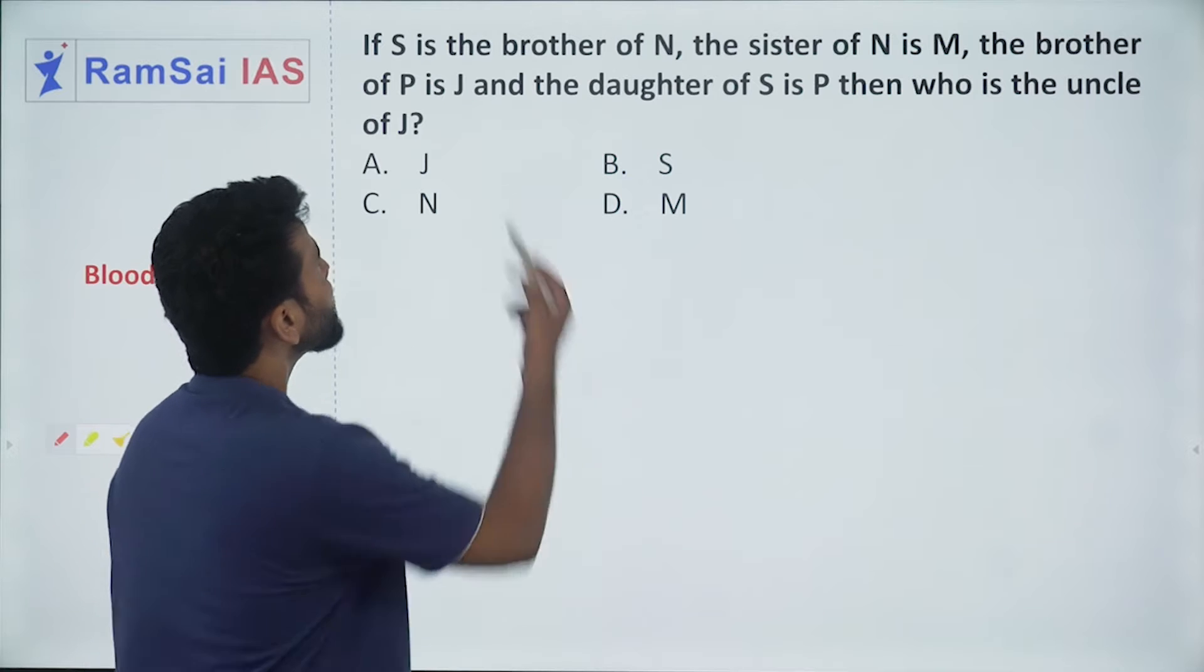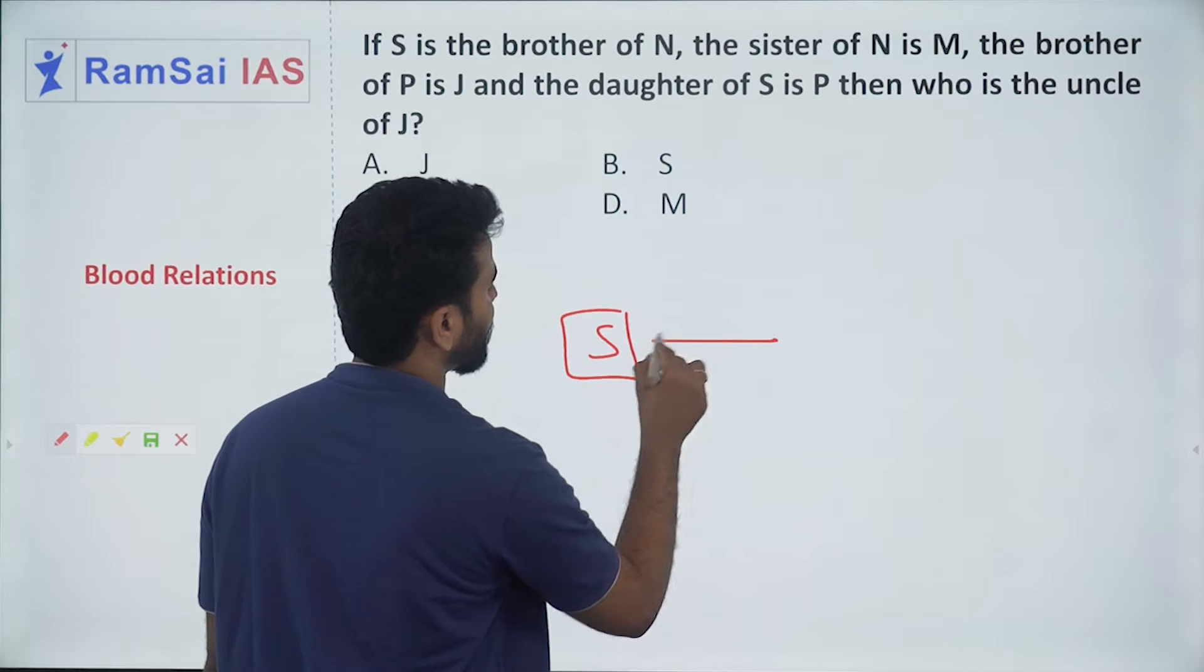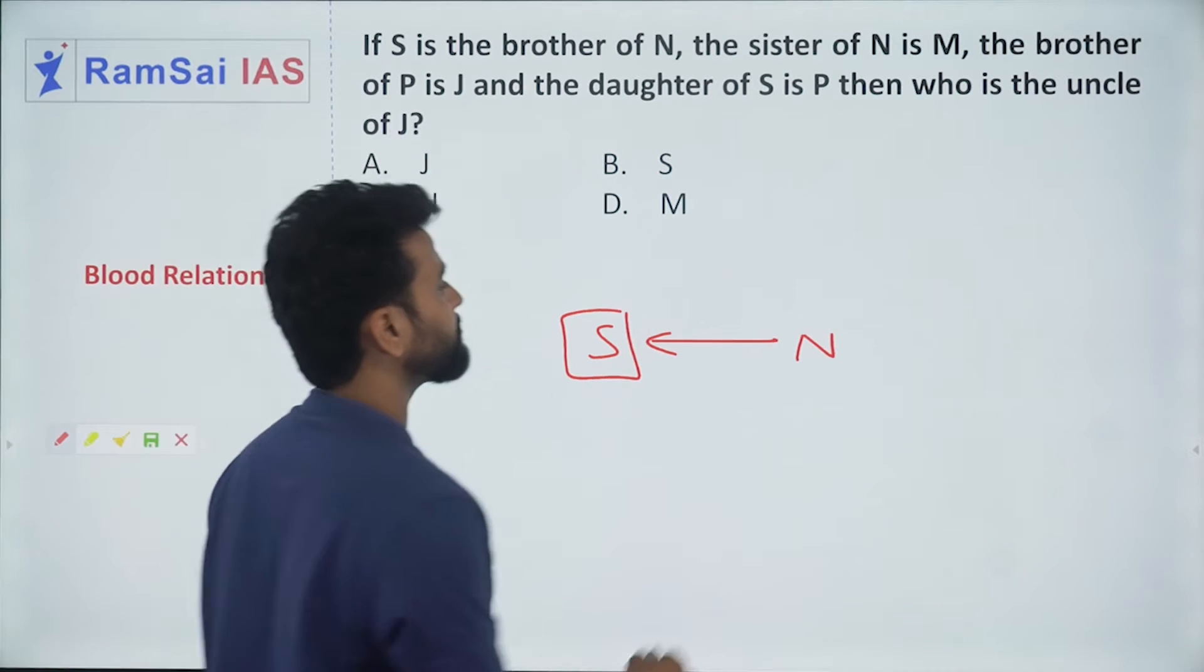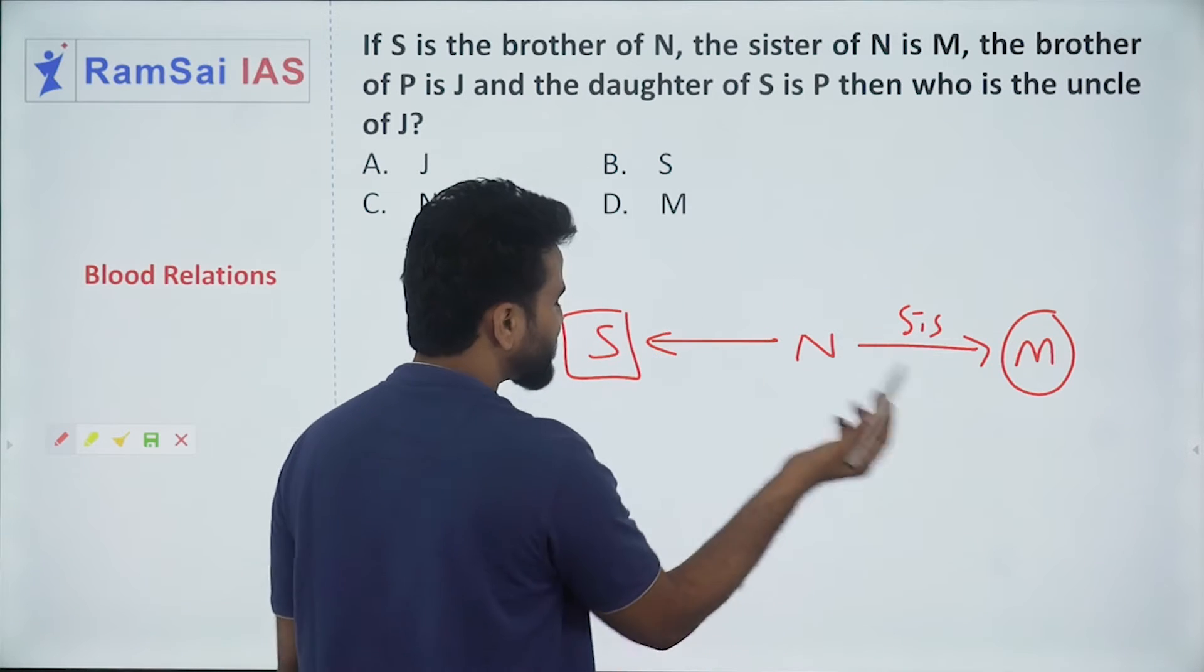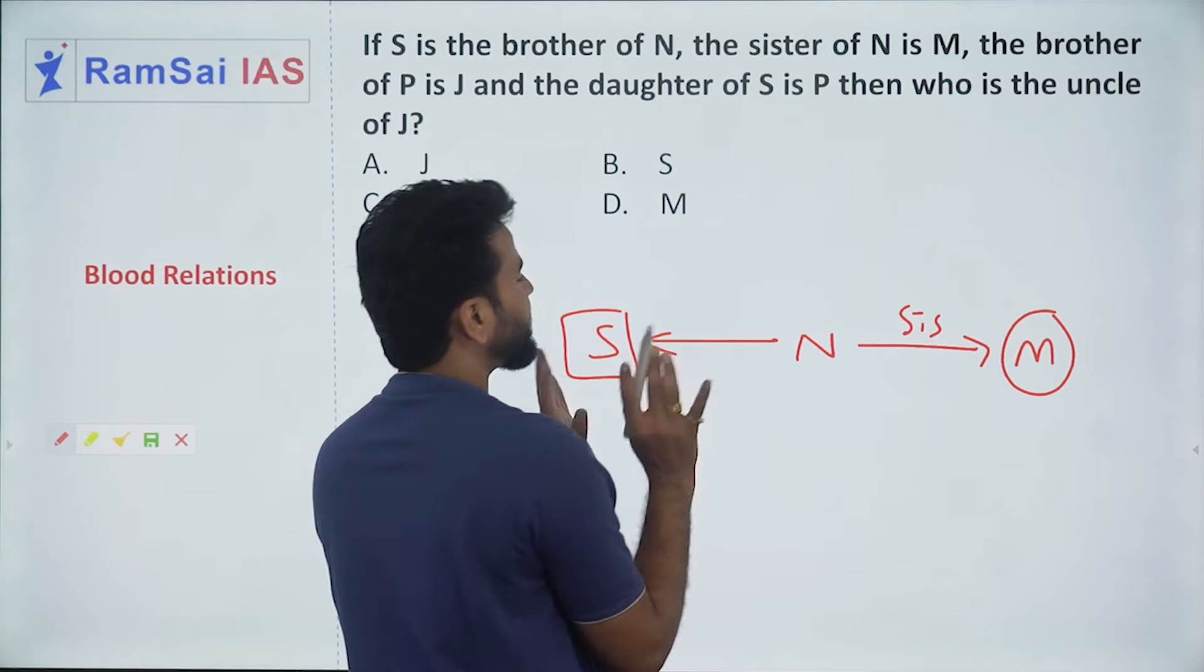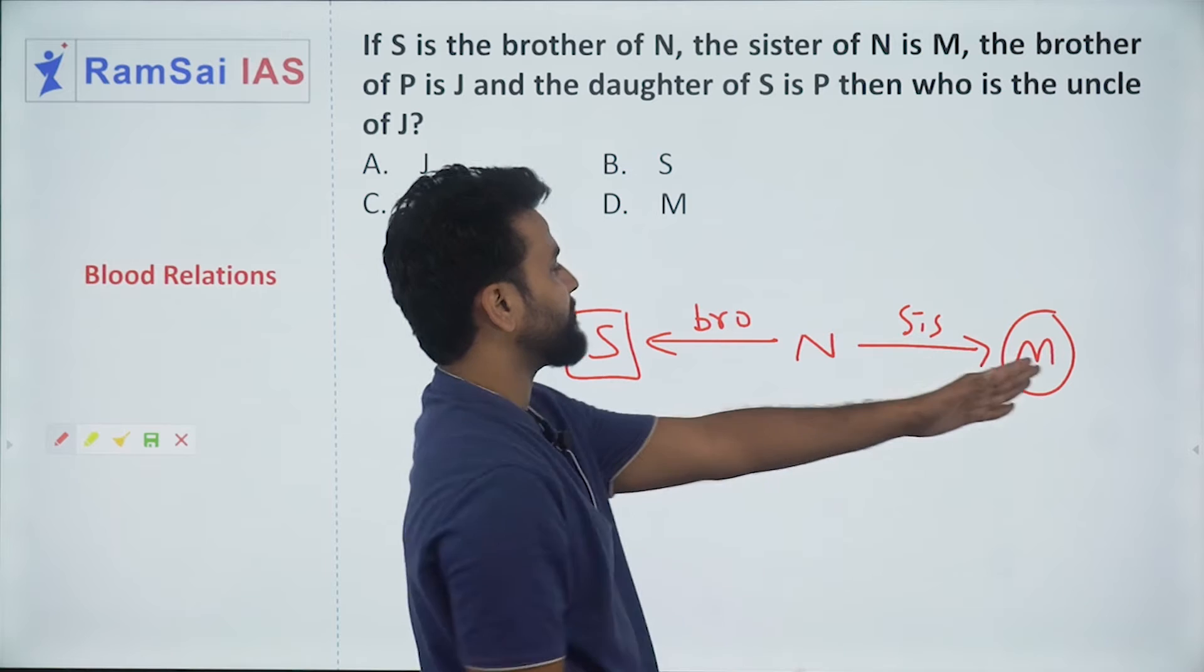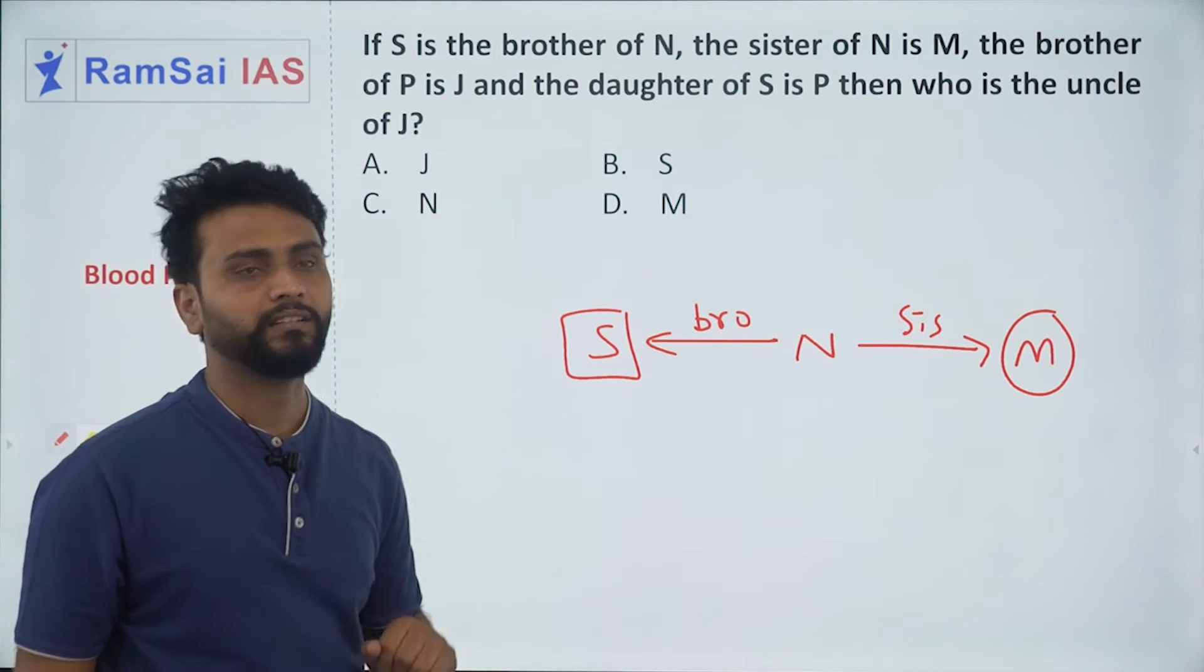Okay, let me draw the diagram first. If S is brother of N and sister of N is M, from these two statements I can clearly understand S is male and M is female. But still, I am in a dilemma. What is the gender of N here? Okay, let it be.